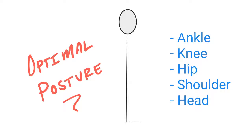What is optimal posture or kinetic alignment? Well, I'm going to show you on the stick figure guide. It's essentially when the ankle, knee, hip, shoulder, and head are all in one line.